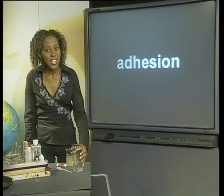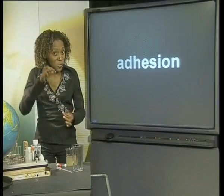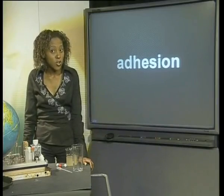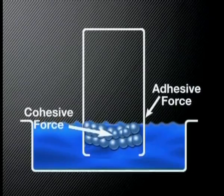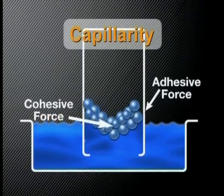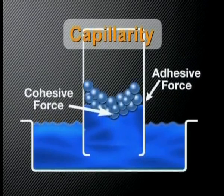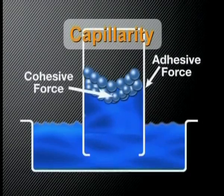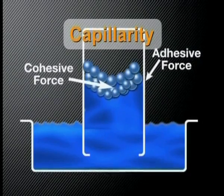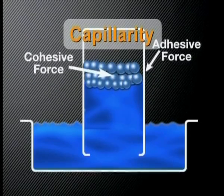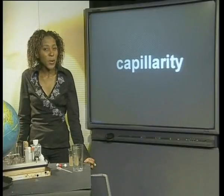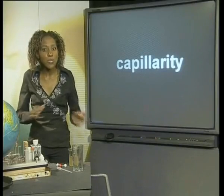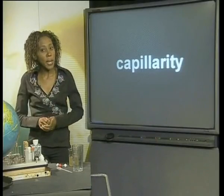Due to cohesion and adhesion, water is also able to move up tubes against gravity — the thinner the tube, the higher it can move. This very special property of water is called capillarity. This animation shows how cohesion and adhesion assist in capillarity: water adheres to the side of the tube and moves up, and because the molecules also stick to each other, the molecules in the middle are pulled up as well. Capillarity is very important for plants because it enables water to move up the stem into the higher parts of the plant.